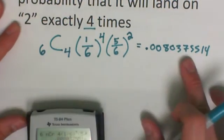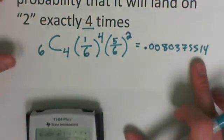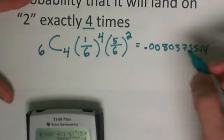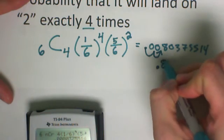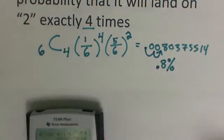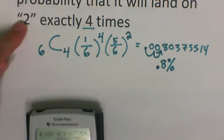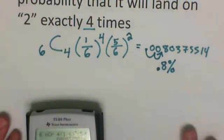If they don't specify, that is a fine answer. You could also change it over to a percent and when we do that, we're always going to move it two places to the right. So this would be .8% chance of happening. So that is fairly low that we're going to just have a 2 exactly 4 times out of 6.